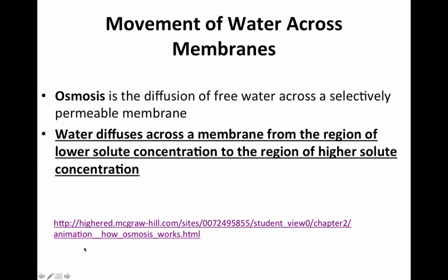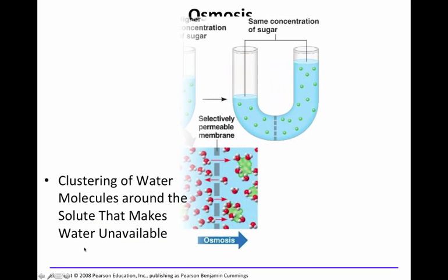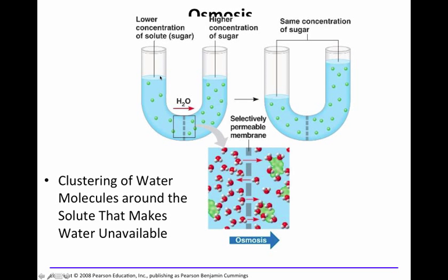Let's look at this again. In this experiment, this is a tube — like a test tube — with a selectively permeable membrane in the middle, shown in a zoomed-in highlighted section. The membrane is semi-permeable, permeable to water. There is water on both sides, but there is a lower concentration of solute on the left side and a higher concentration on the right. In this instance, it's sugar shown in the grid with the green dots.